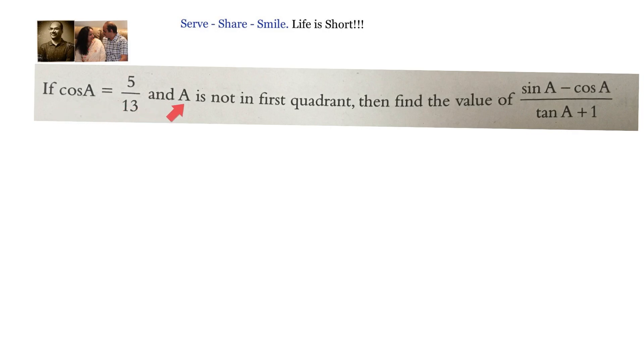If cos A equals to 5 by 13 and A is not in first quadrant, then find the value of sin A minus cos A by tan A plus 1.